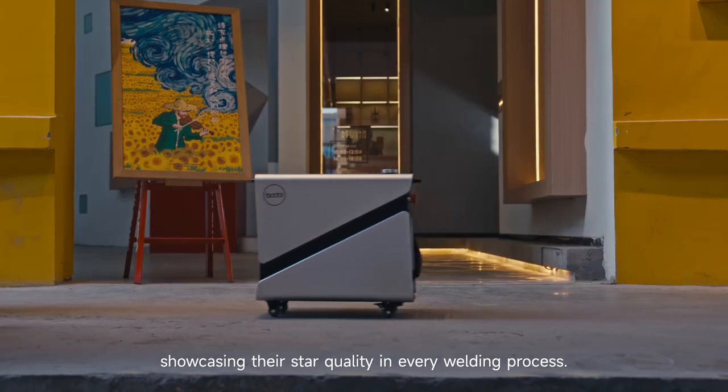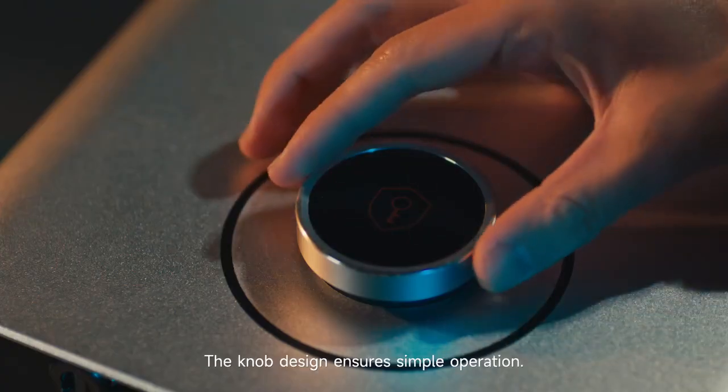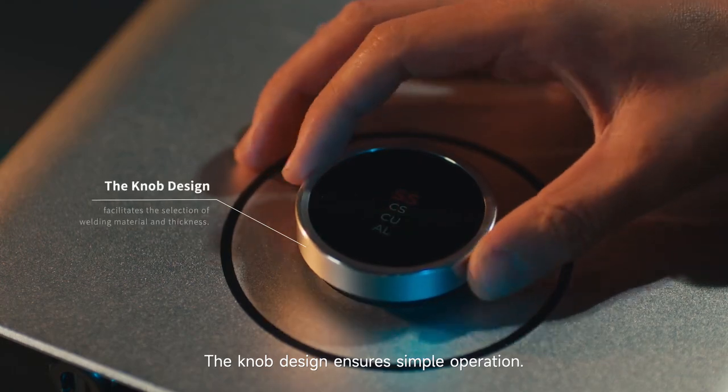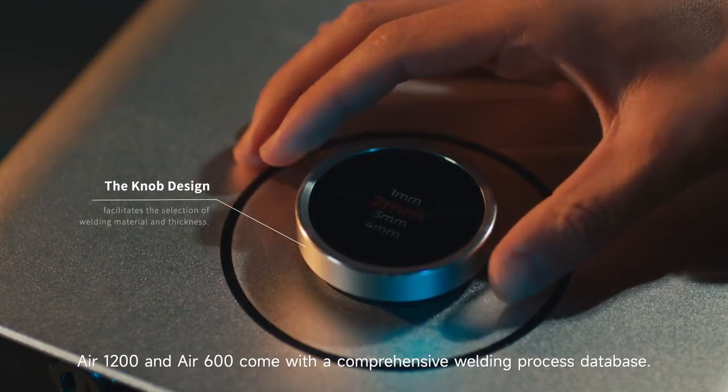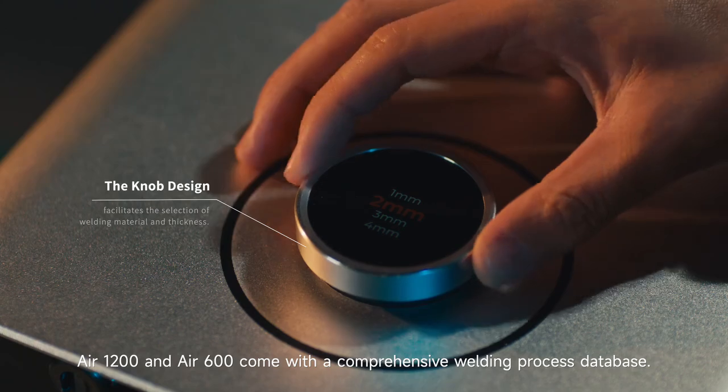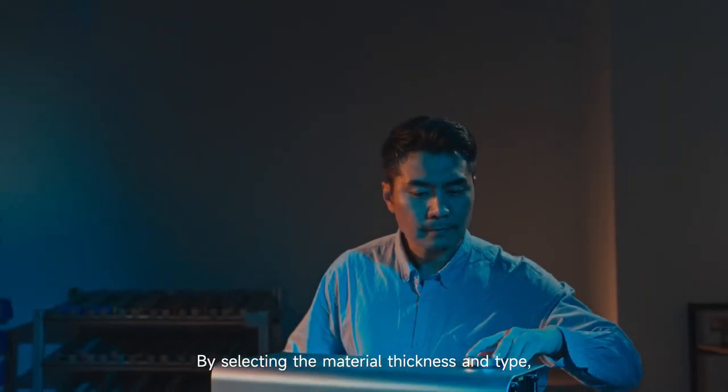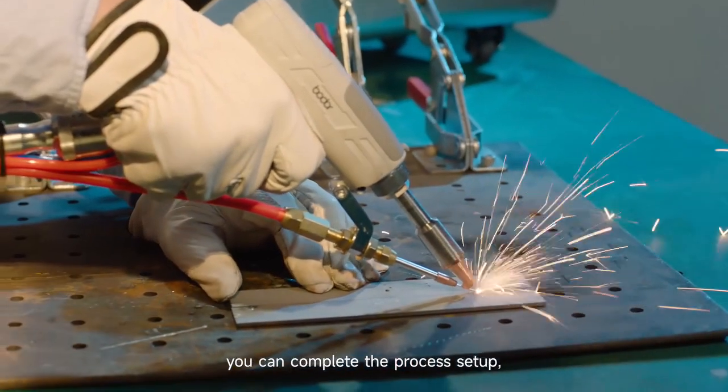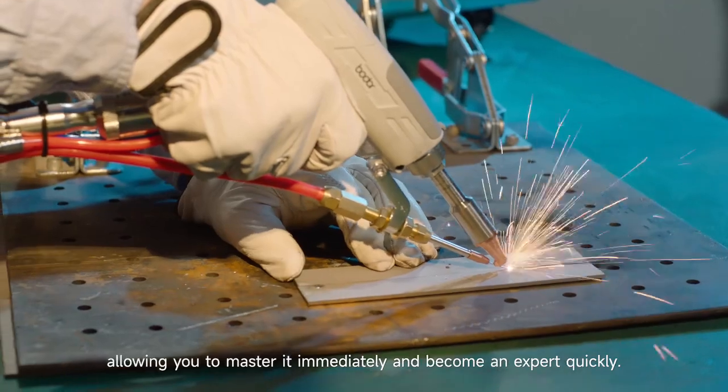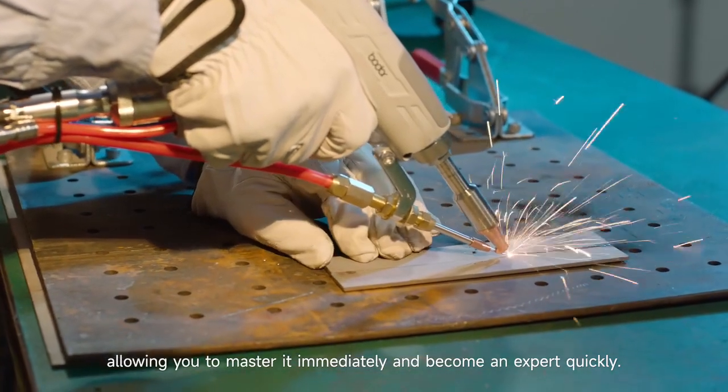The knob design ensures simple operation. Air 1200 and Air 600 come with a comprehensive welding process database; by selecting the material thickness and type, you can complete the process setup, allowing you to master it immediately and become an expert quickly.